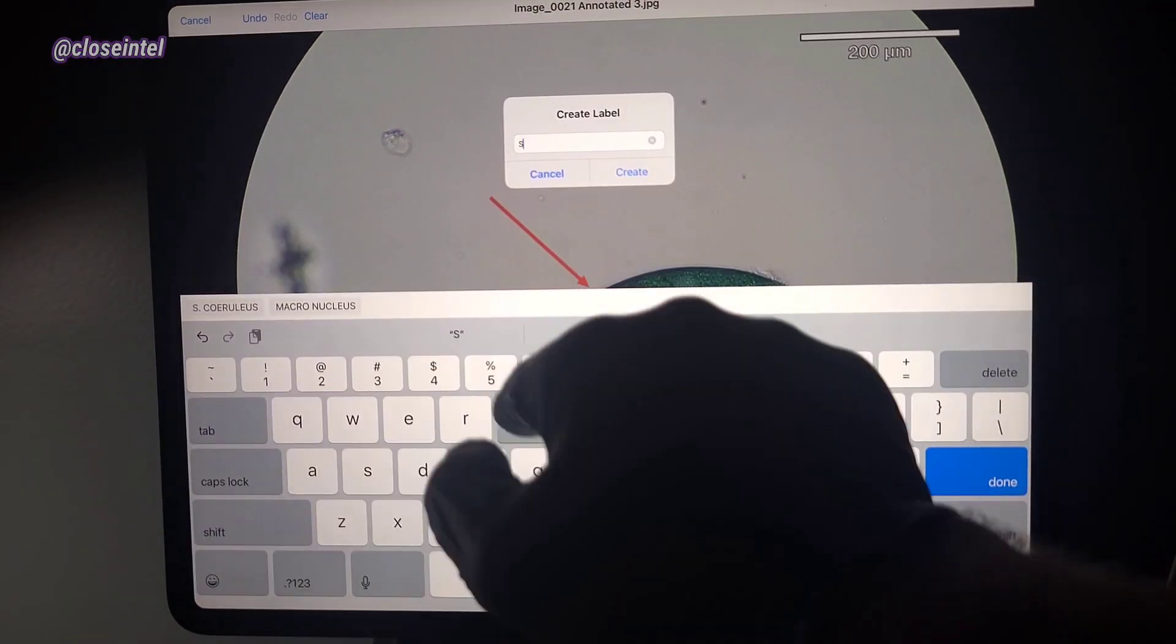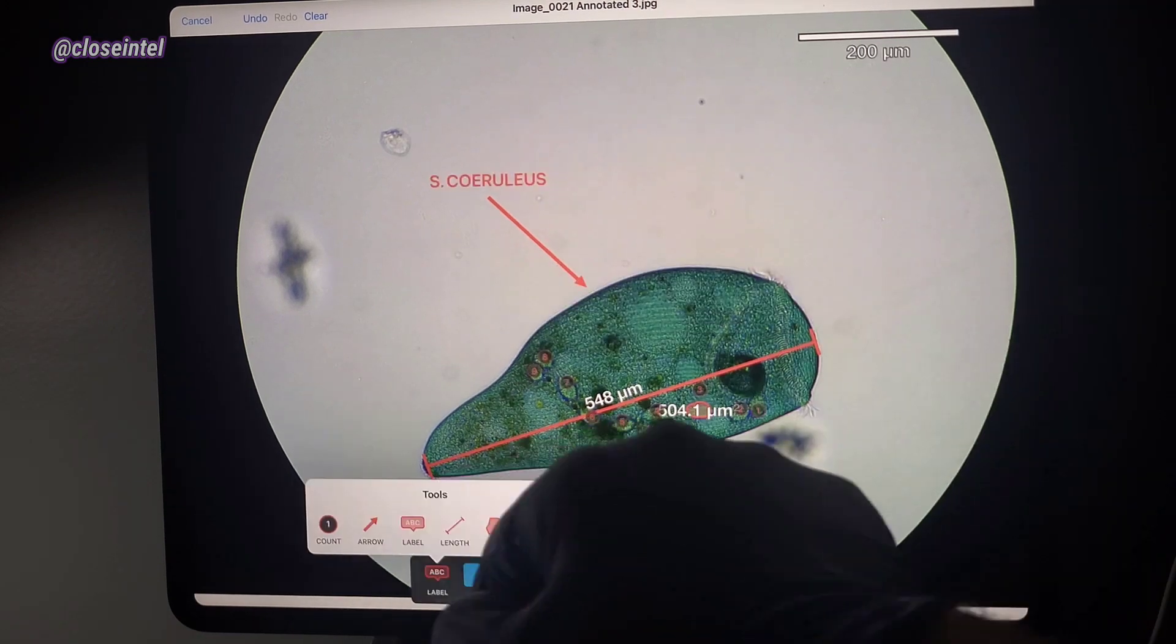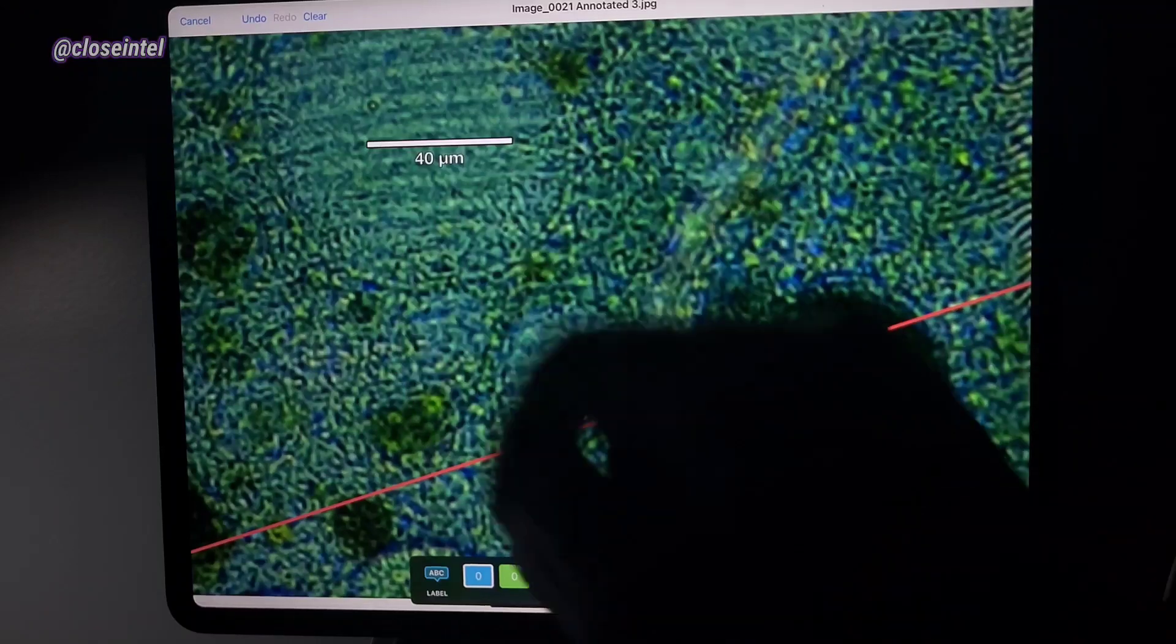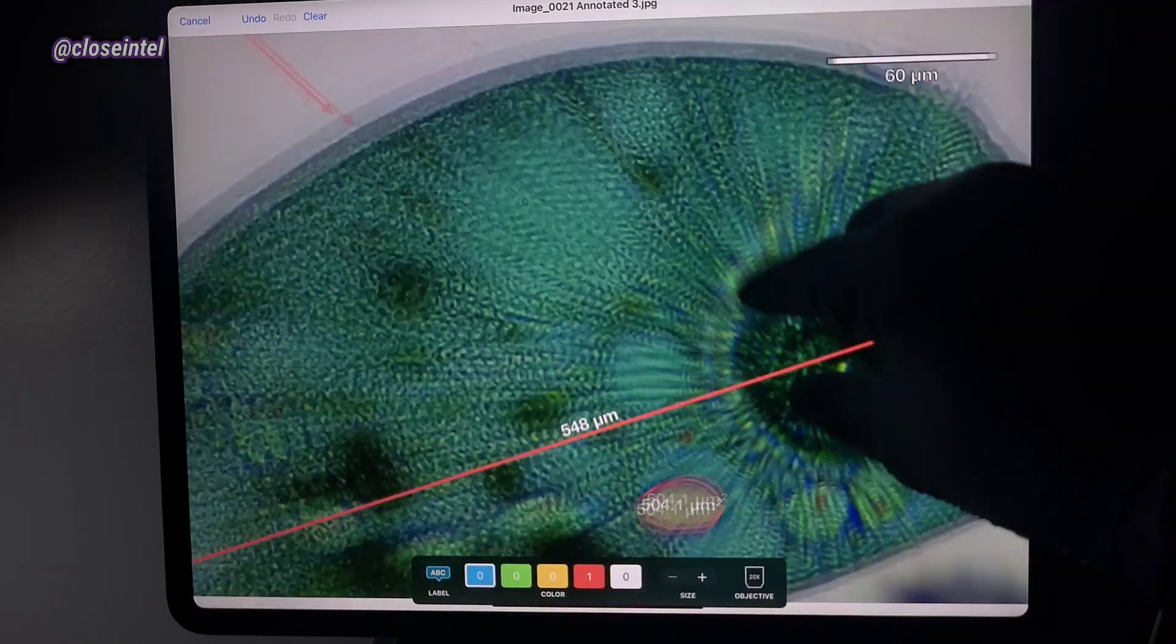It also has nine macronuclei which take up an area of about 500 microns each. I also noticed the scale bar actually scales with the image as you zoom in on them which I thought was pretty cool.